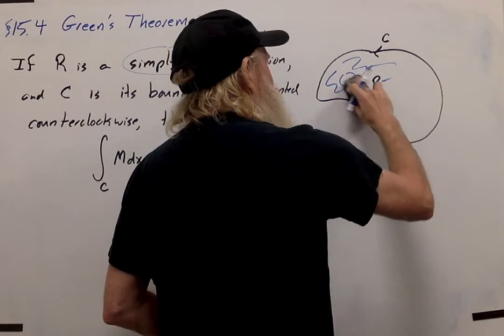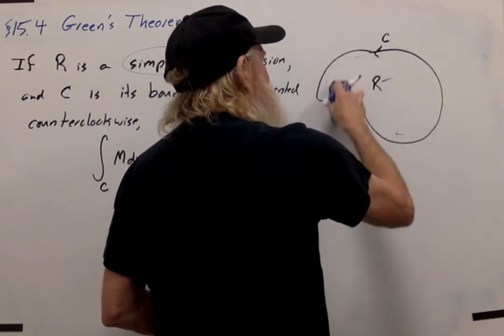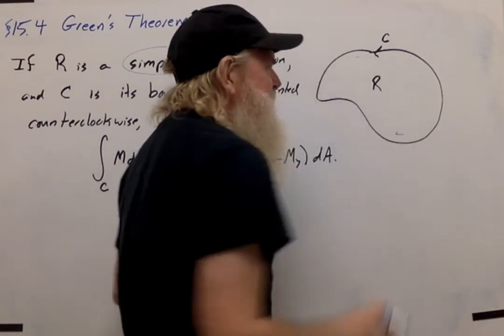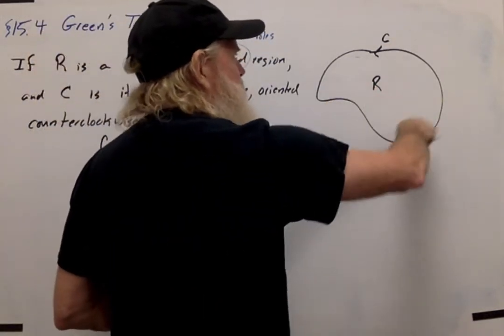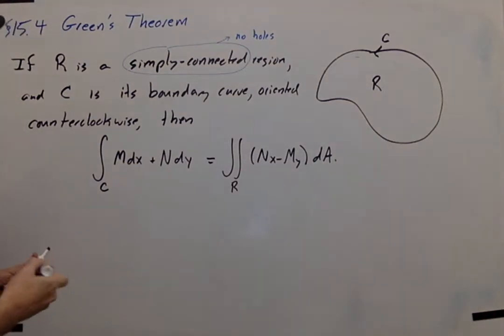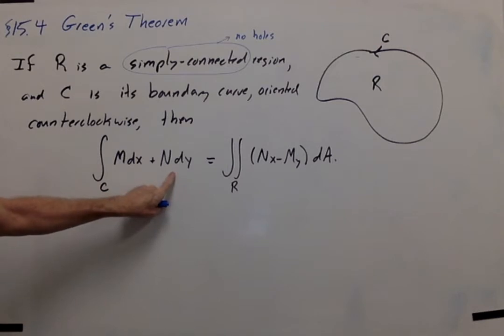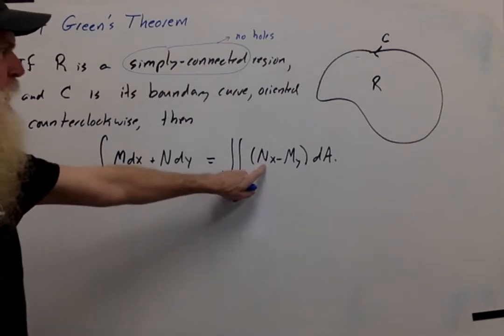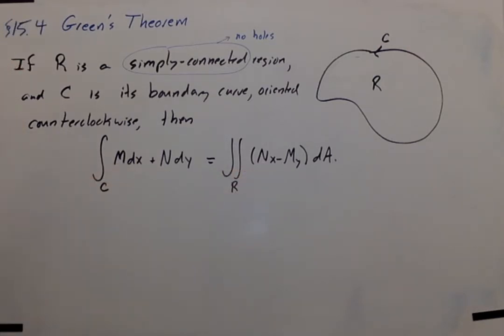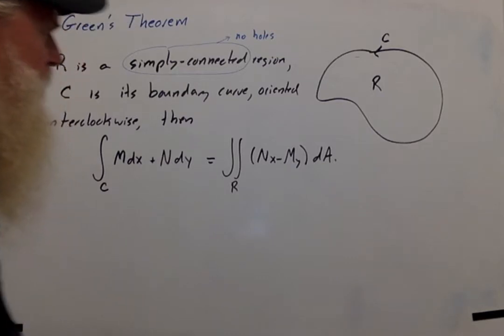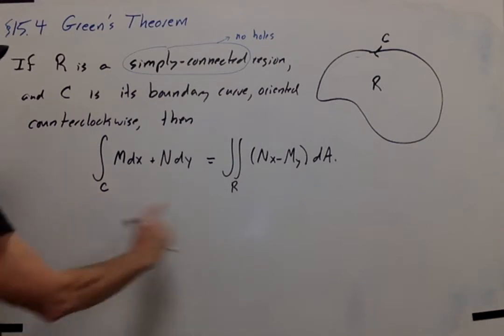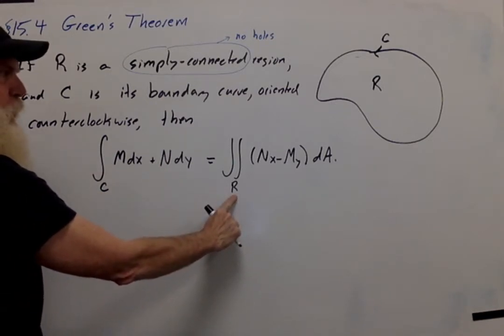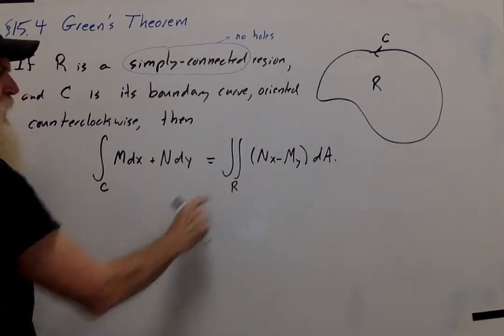So we're assuming that R is simply connected, that there are no holes in it, and we're also assuming that C is its boundary curve, and that C is oriented counterclockwise around R. If that's the case, then the integral over C of Mdx plus Ndy is equal to the derivative of N with respect to x minus the derivative of M with respect to y dA. So this integral over the boundary is equal to this integral over the region R. So a single integral equals a double integral. Now let me give you some comments on this.